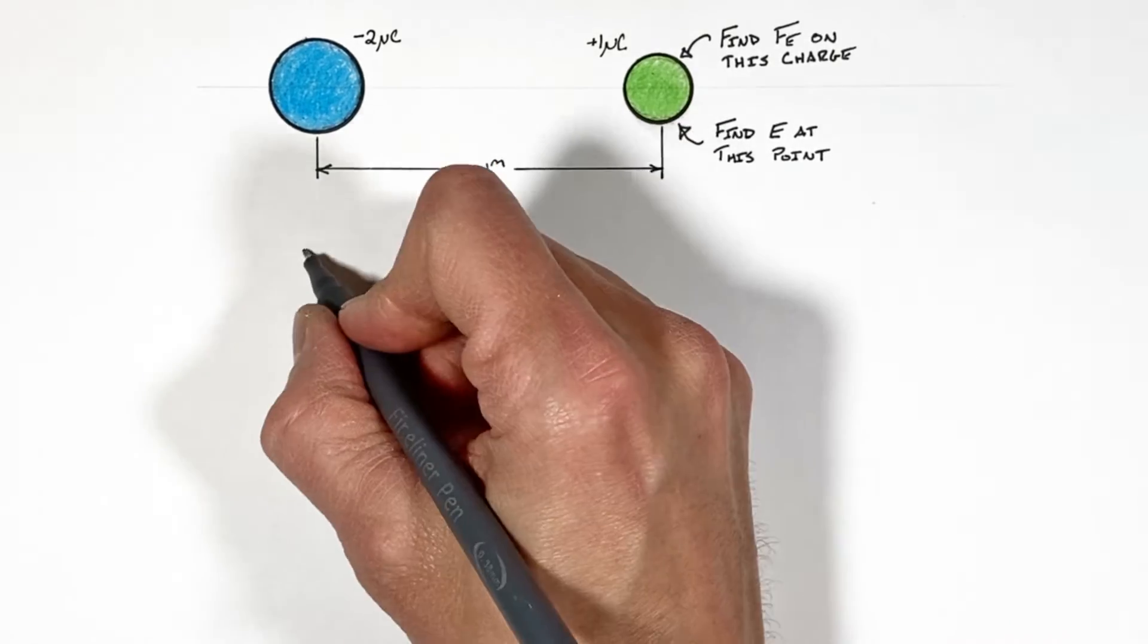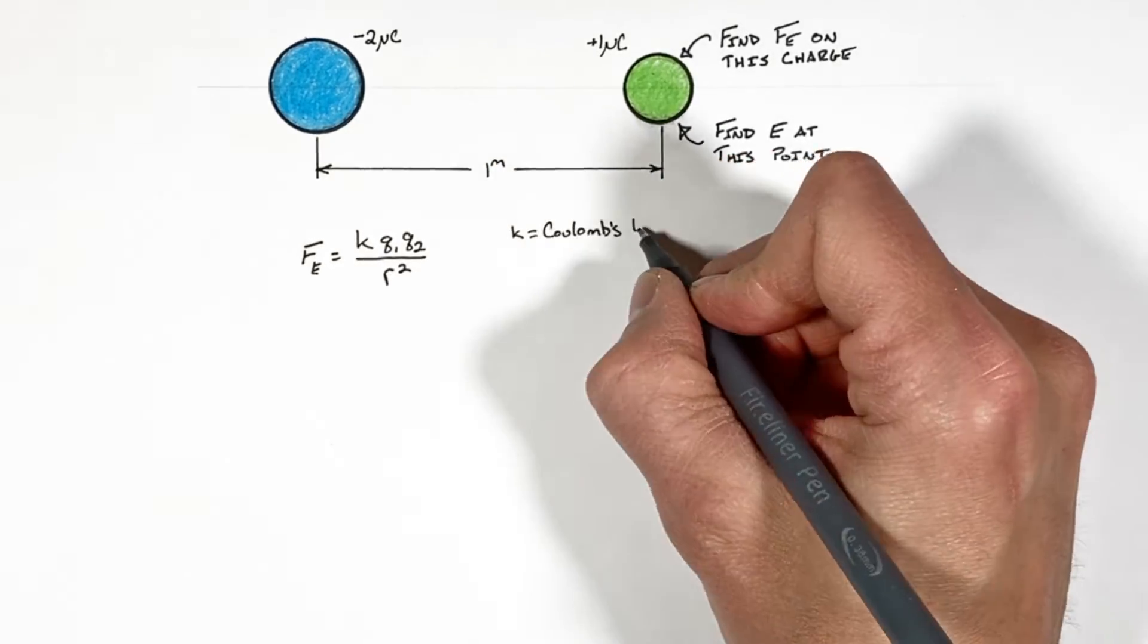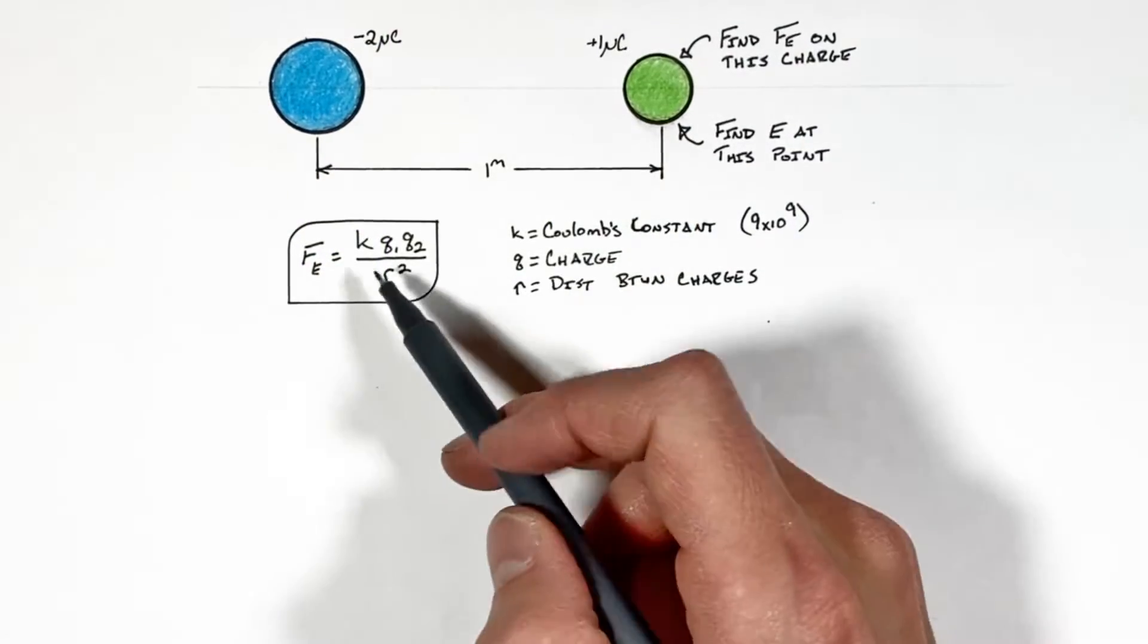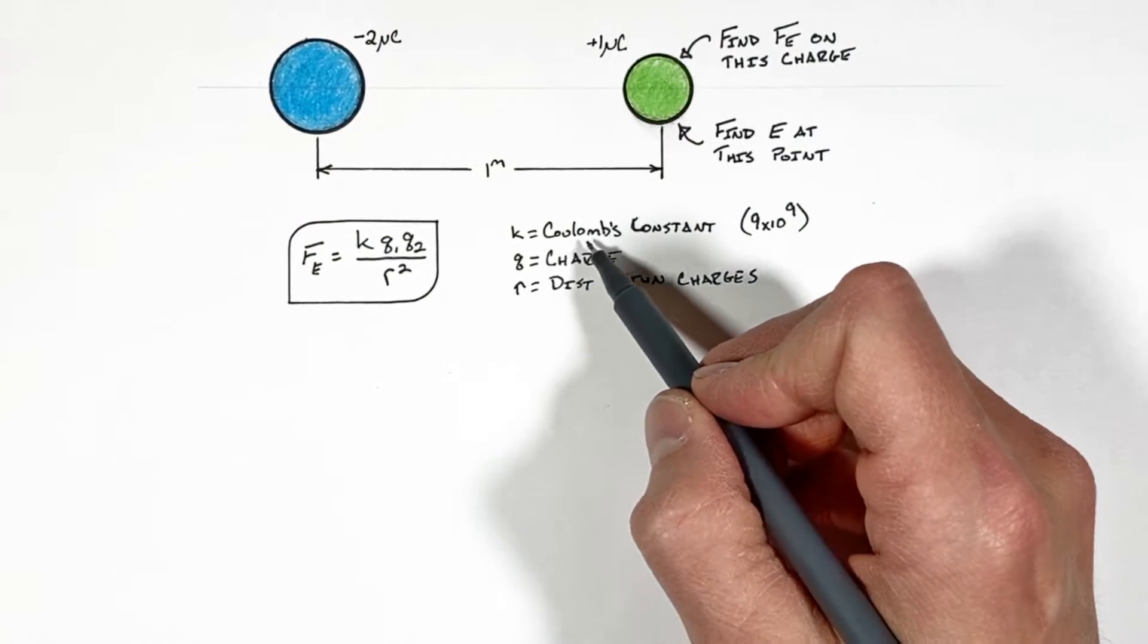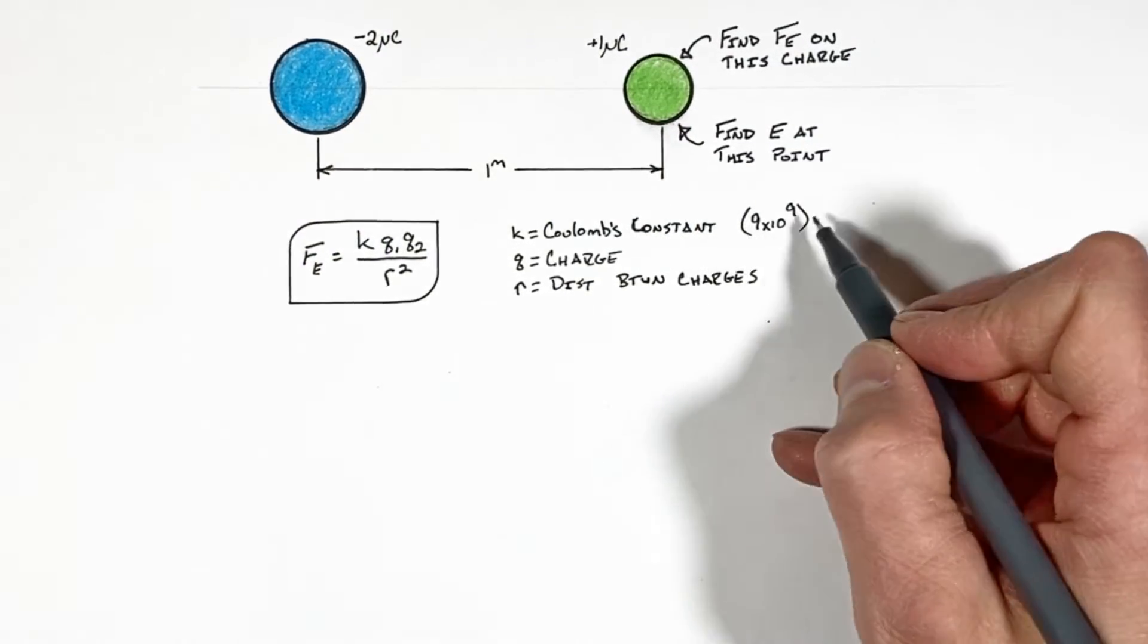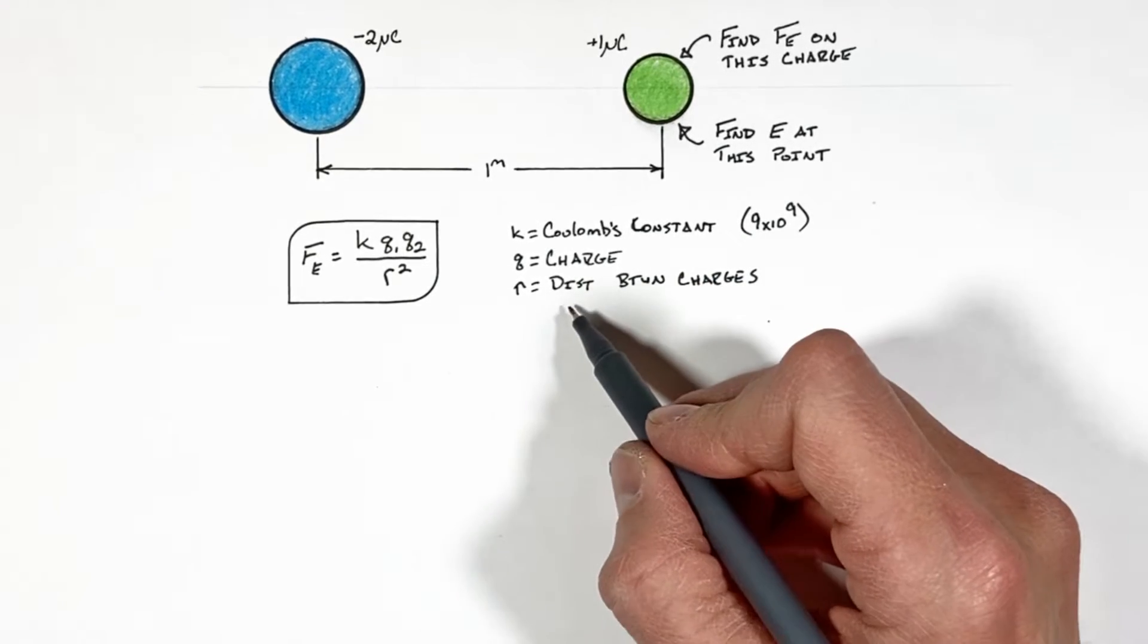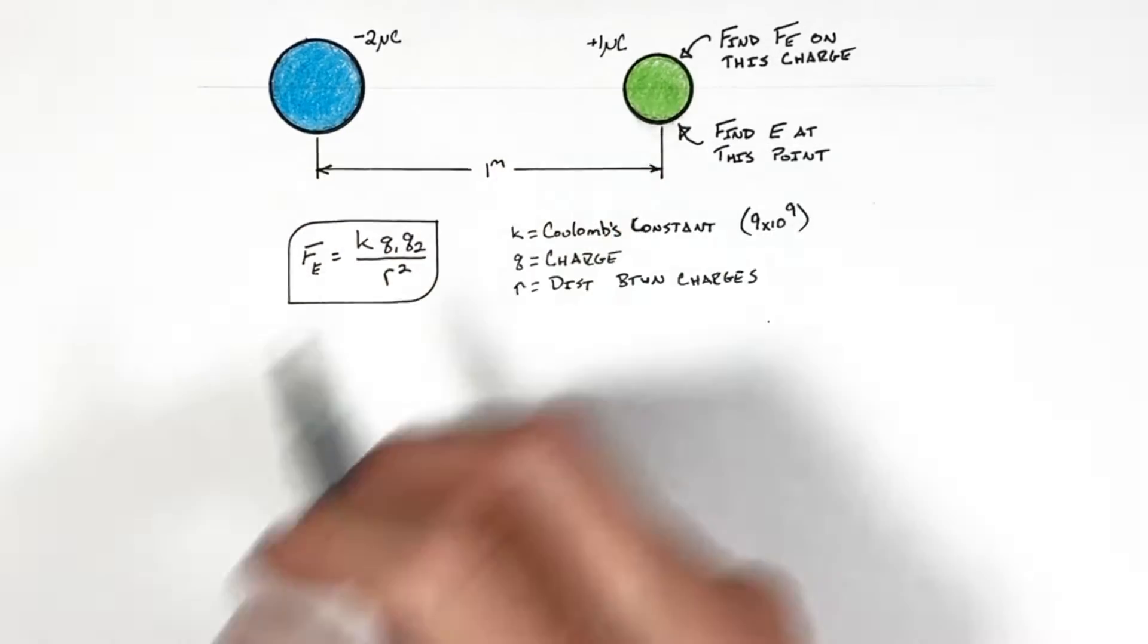Now electric force can be found using Coulomb's law, and Coulomb's law is given by this function where k is what's called Coulomb's constant, that's nine times ten to the ninth, q is the charge, and r is the distance between the two charges.